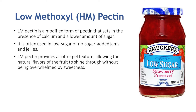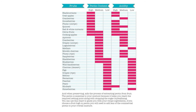LM pectin can be found in varying amounts in different fruits. Some fruits are naturally high in pectin, while others contain less. If you're planning to make jam using fruits that are low in pectin, you may need to supplement it with additional pectin.